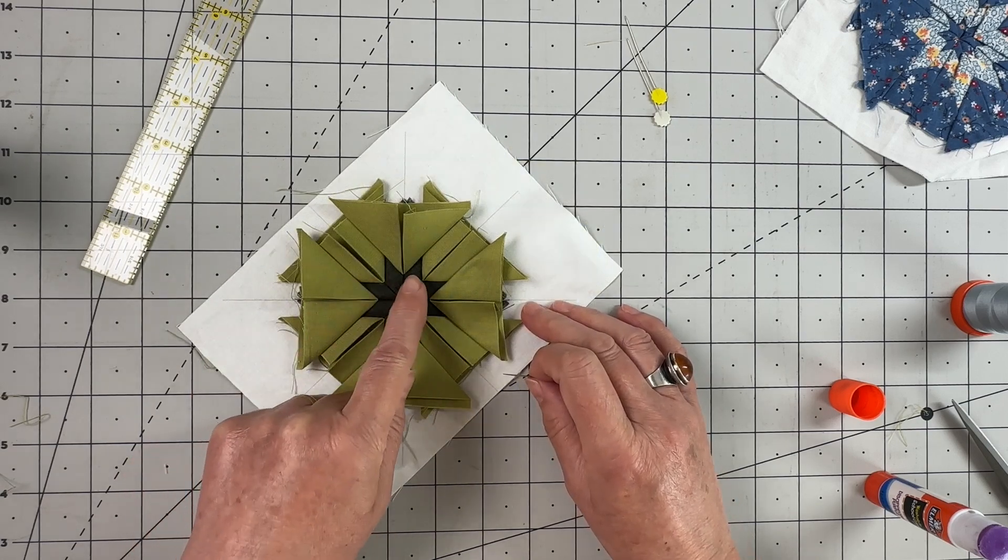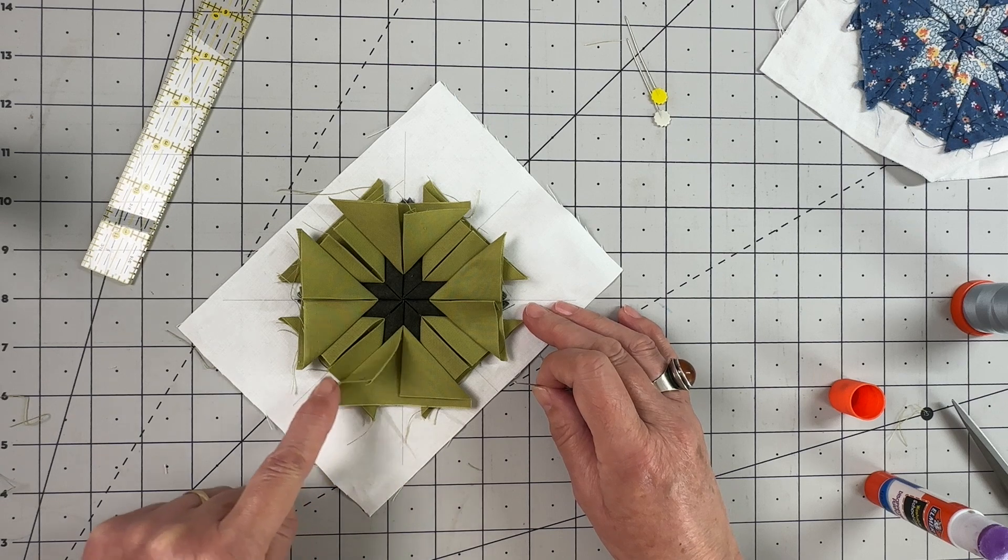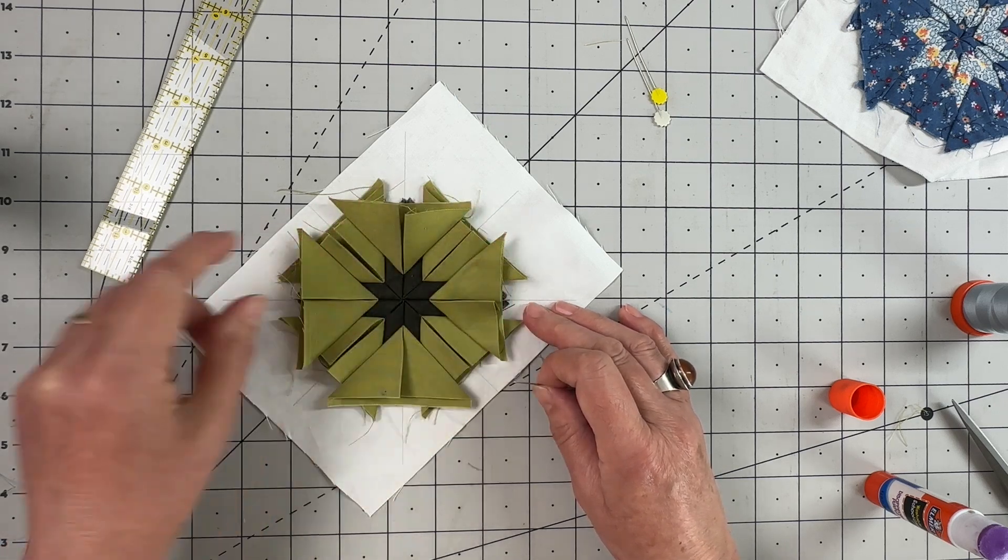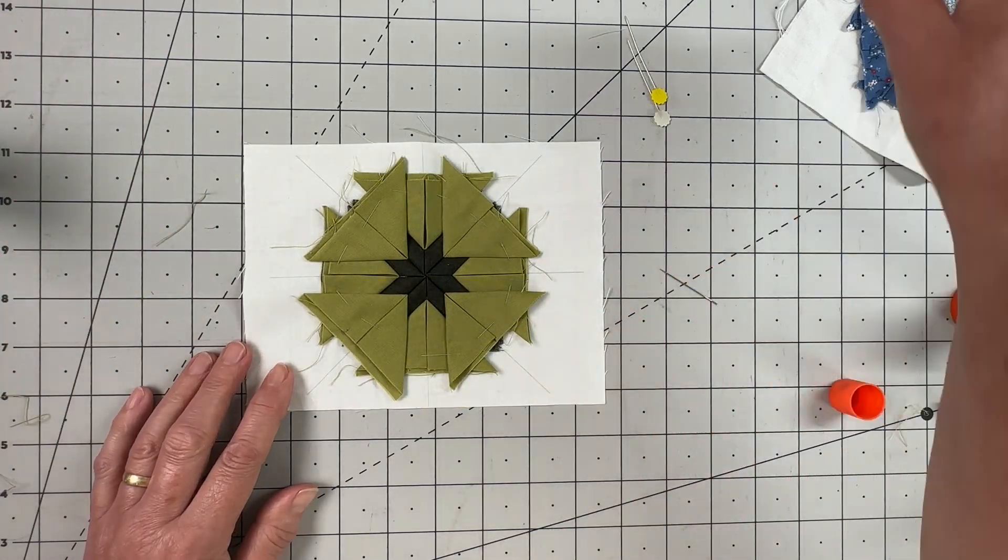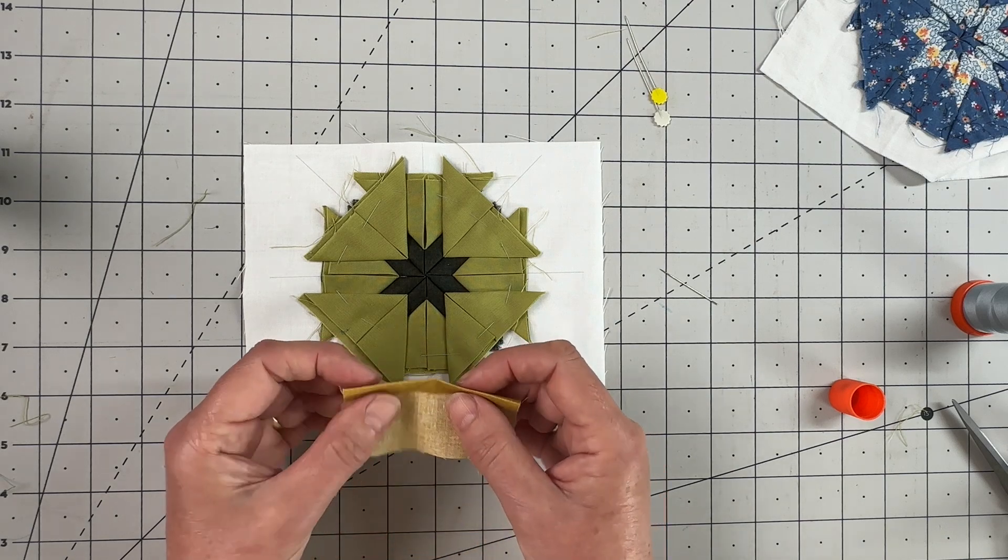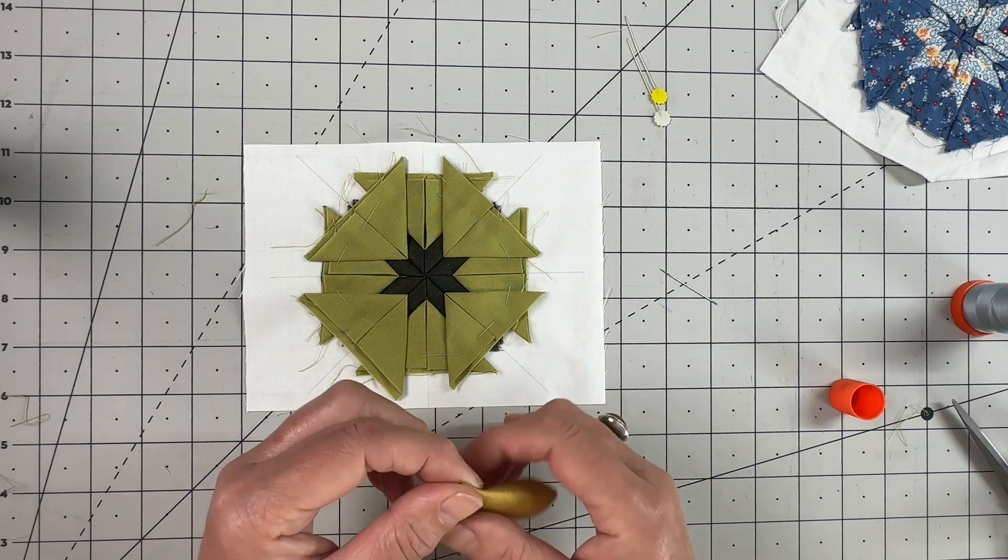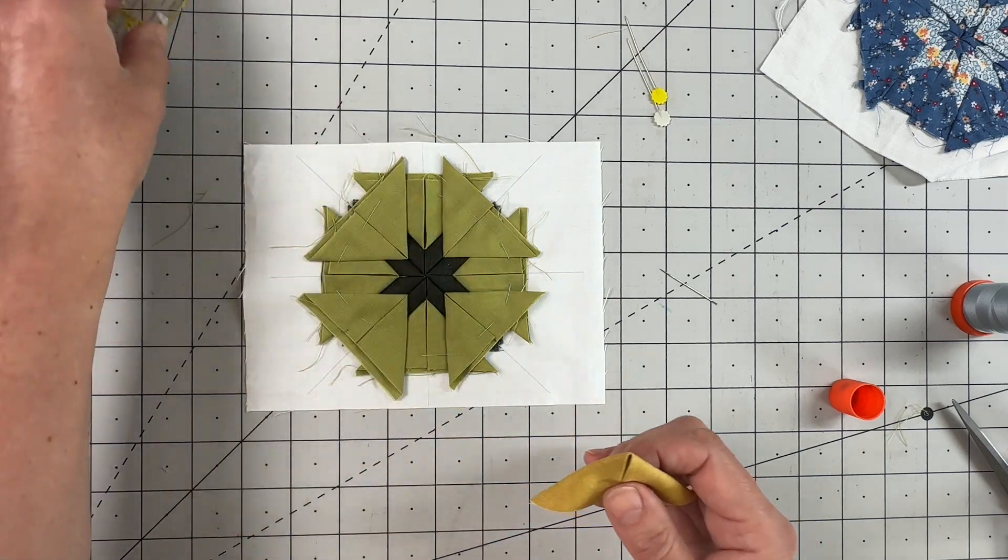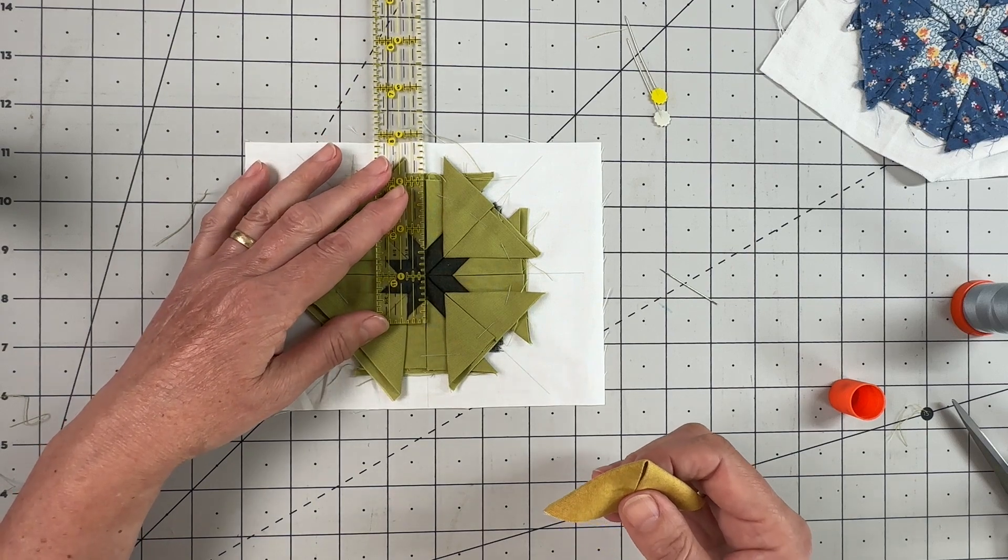Once all of your points have been secured, you can then come back out to the outside and do the big tacking stitch all the way around to secure all of your edges once more. You're now going to take your final color and, having prepared them in exactly the same way, you're going to measure out from that center, only this time we're going to use an inch.